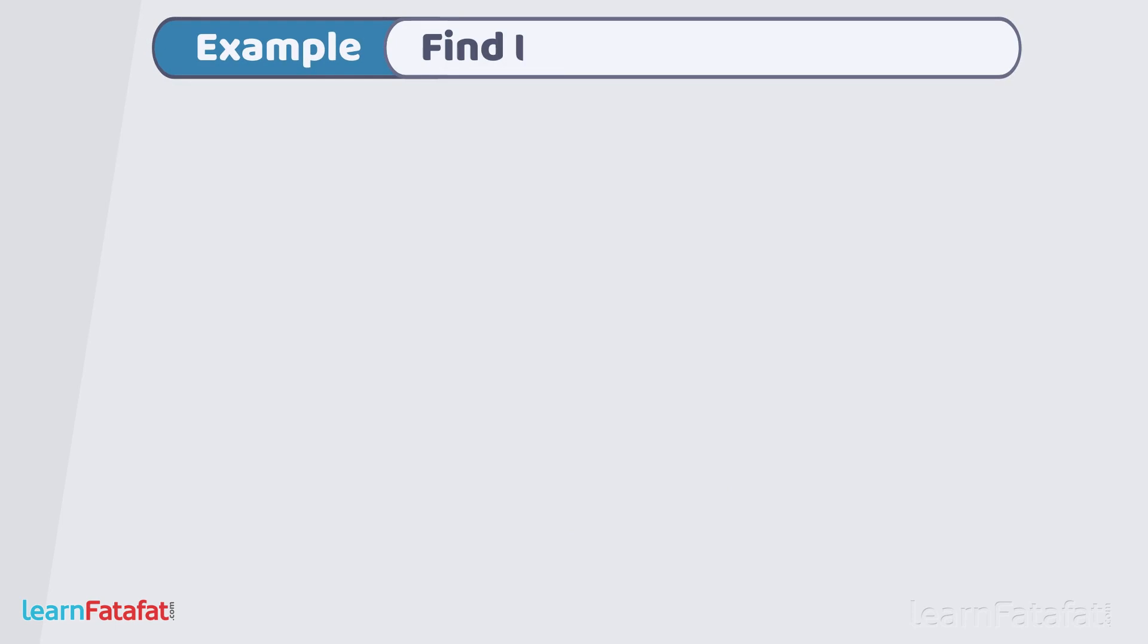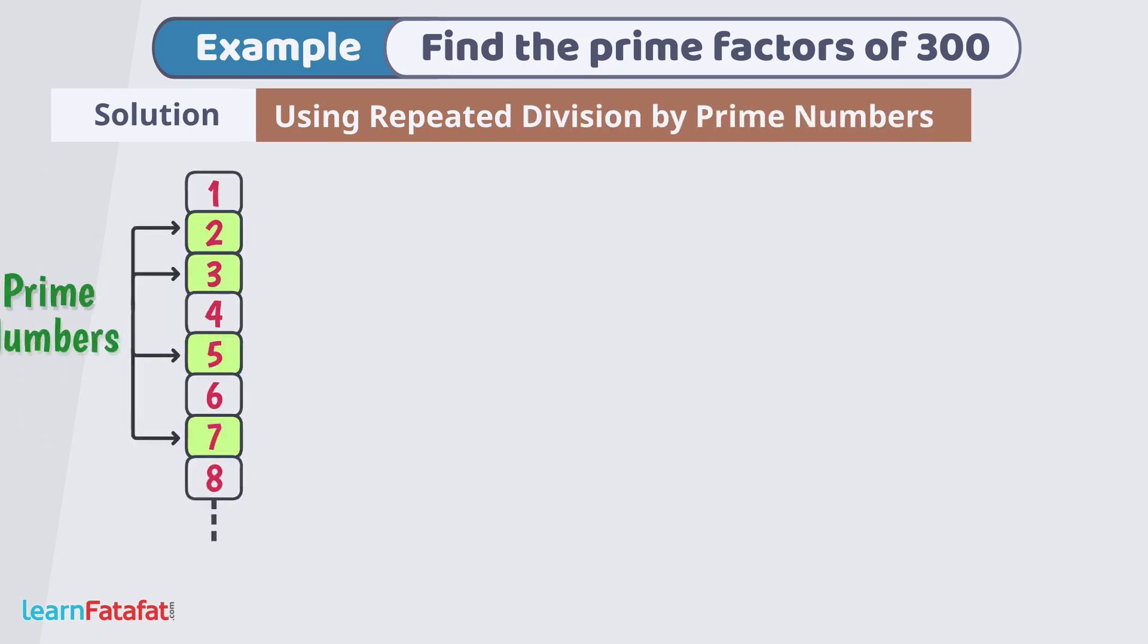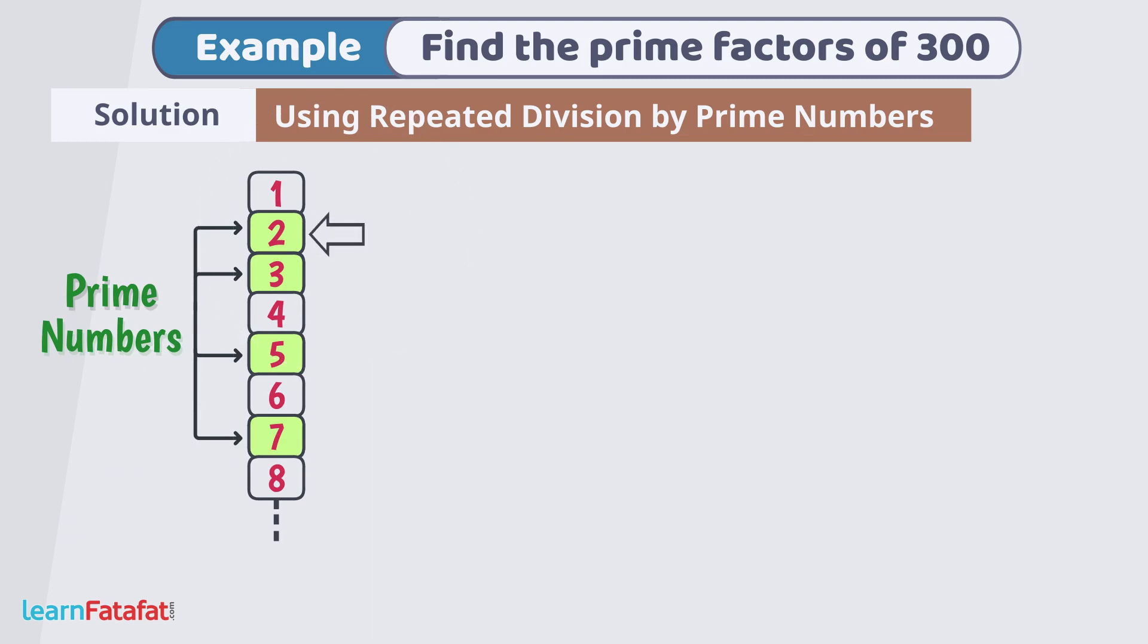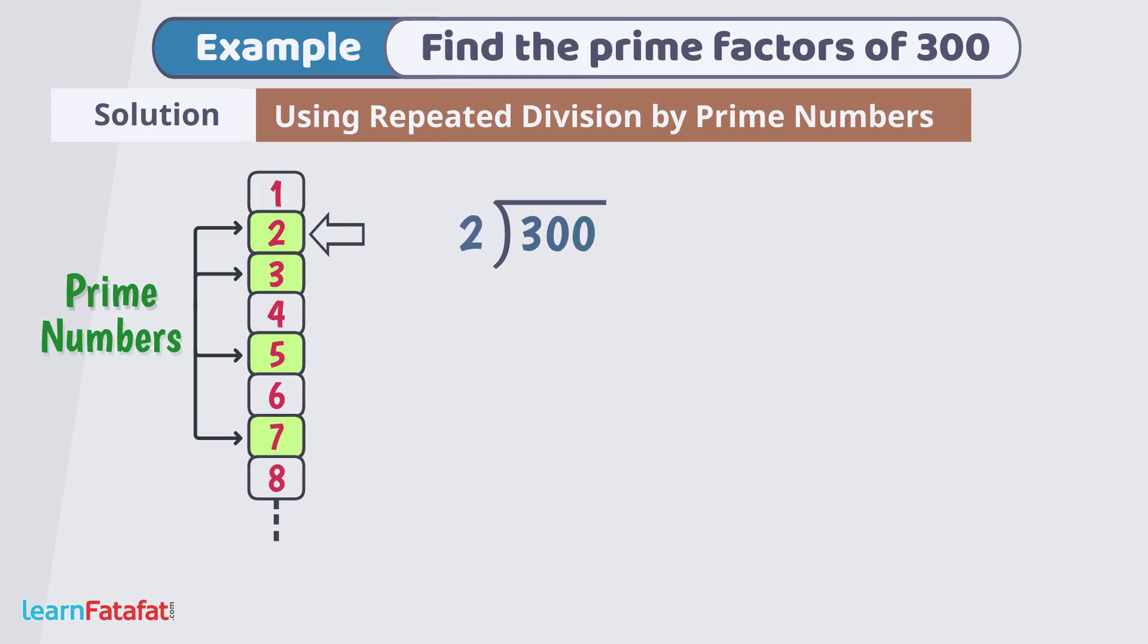Example, find the prime factors of 300. Let's find prime factors by repeated division of number by prime numbers. Take smallest prime number that is 2. Check last digit of 300. It is 0. So, by divisibility rule of 2, the number 300 is divisible by 2. Dividing 300 by 2, we get quotient 150.